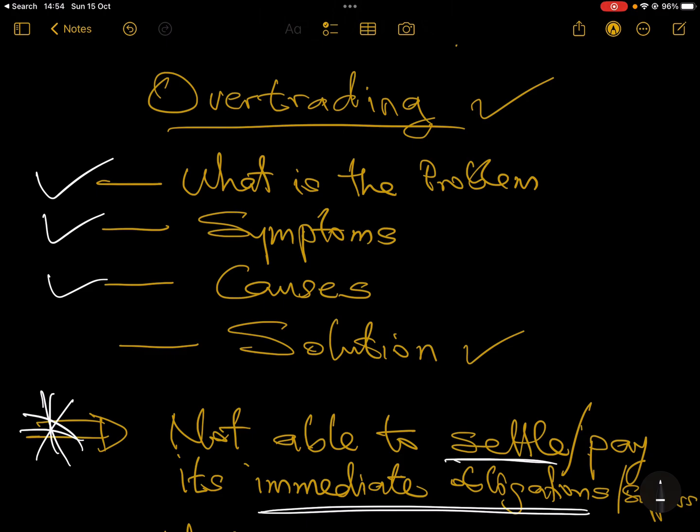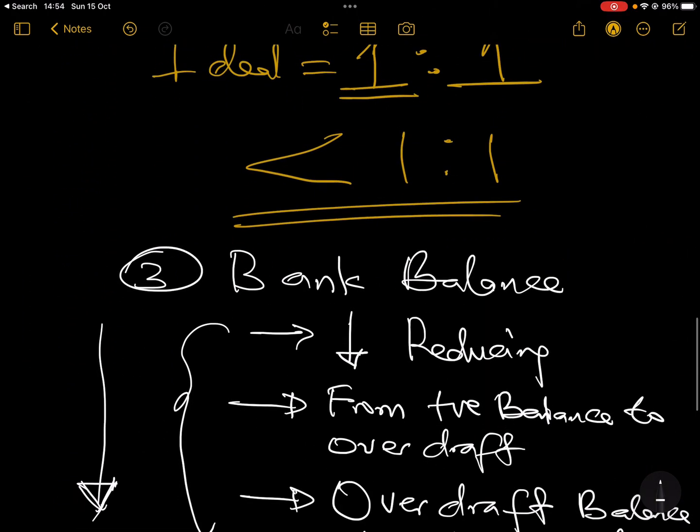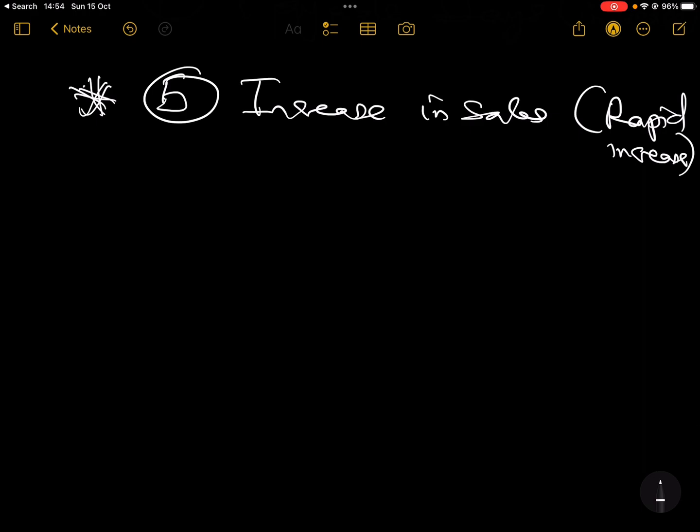And symptoms - I've spoken about the symptoms. You need to do ratios: current ratio, quick ratio, less than the ideal ratios. Or you have increasing payable days, or your bank balance is reducing, overdraft is increasing, or sales ratio from previous year, increase in sales has gone up so drastically. That's your symptoms. Then having gone through the symptoms, the causes, and definition, what is the solution? Because for every problem there has to be a solution. And guess what, for this one it's very simple and straightforward, and it's just one solution.